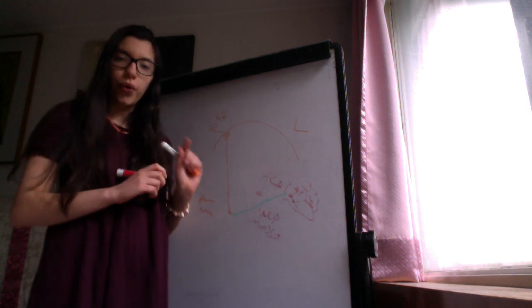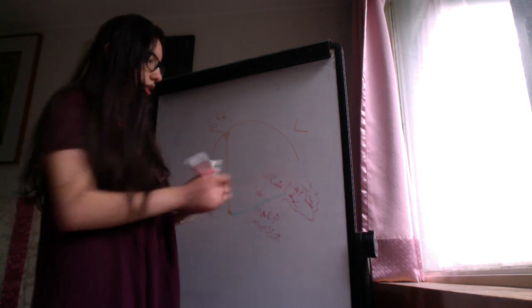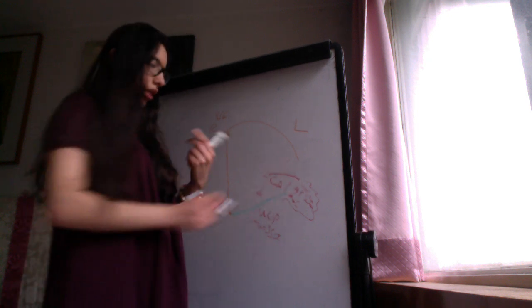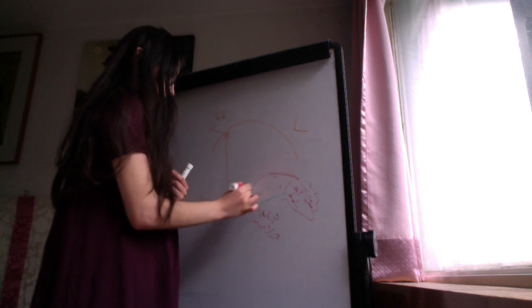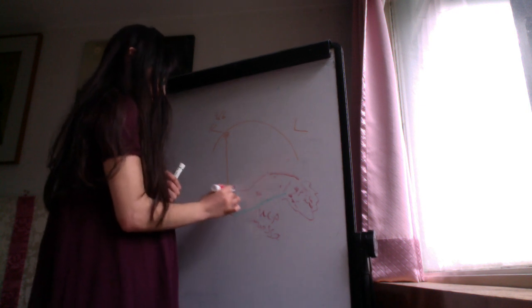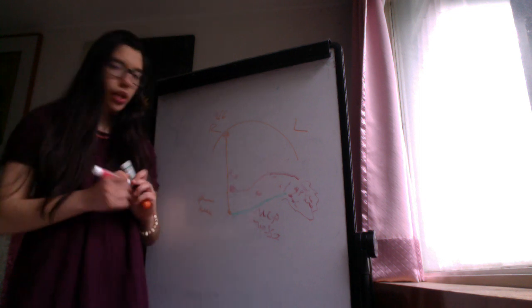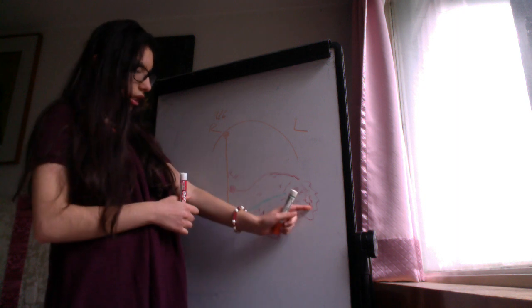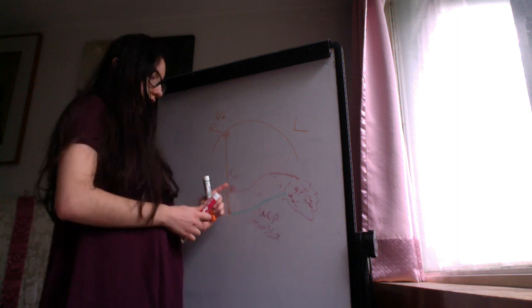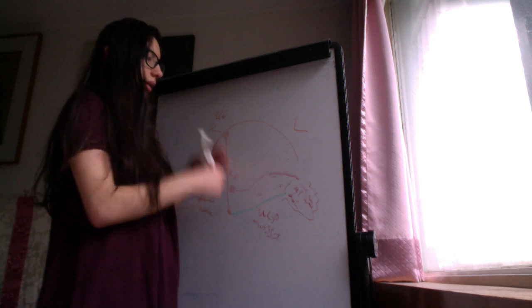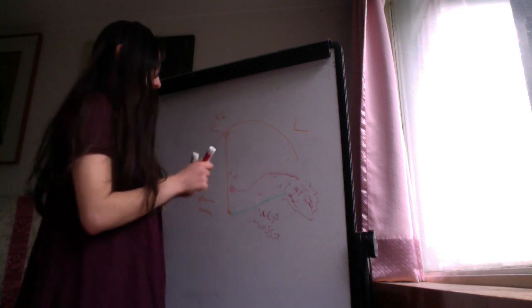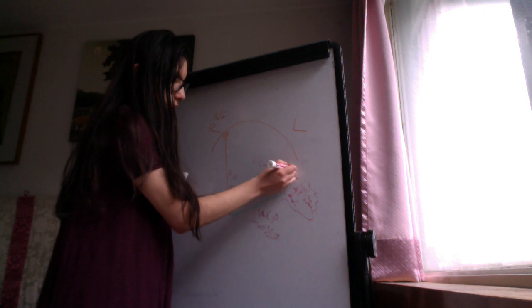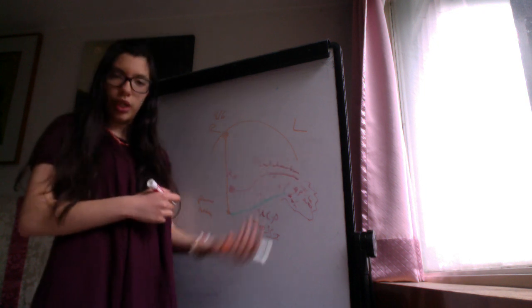But before they synapse, the superior cerebellar peduncle decussates. So the synapse is on the red nucleus of the contralateral side. This tract is called the dentatorubrothalamic tract. It goes from the dentate nucleus to the red nuclei and then to the thalamus.